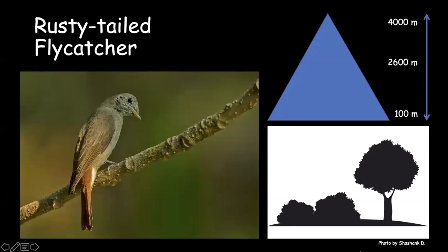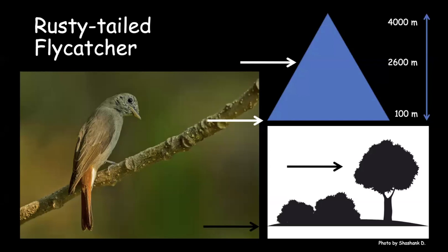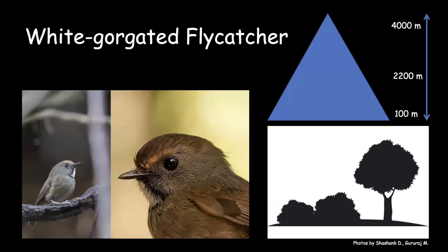The rusty-tailed flycatcher is regularly seen in the southern Western Ghats. The main ID feature is the very bright rufous-colored tail on an otherwise very dull brown bird. It breeds in the western Himalayas, especially Kashmir, going up to about 2,000–2,500 meters. It always occupies slightly mid-canopy and bushes, but its breeding habitat is being threatened by overgrazing in the western Himalayas. It's not a very active hunter — it sits at one place and tries to catch insects.